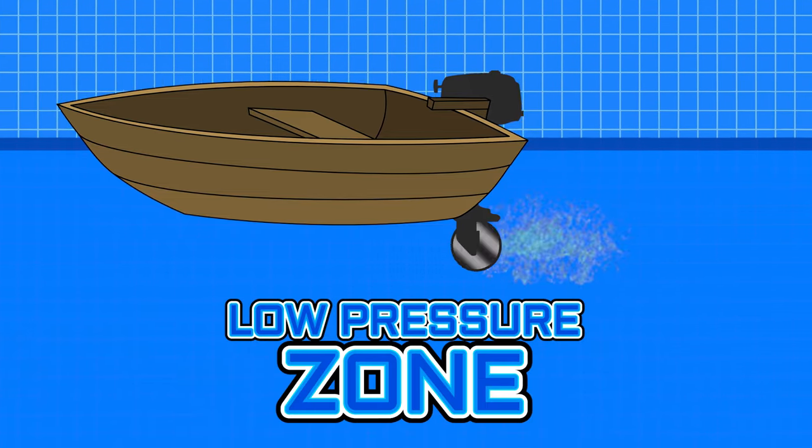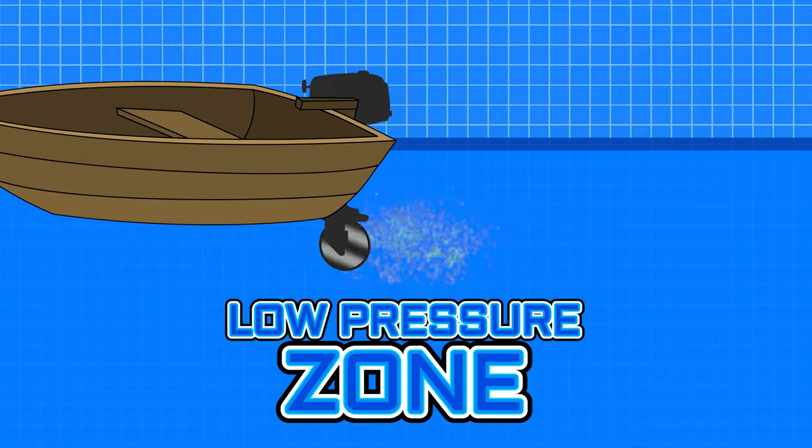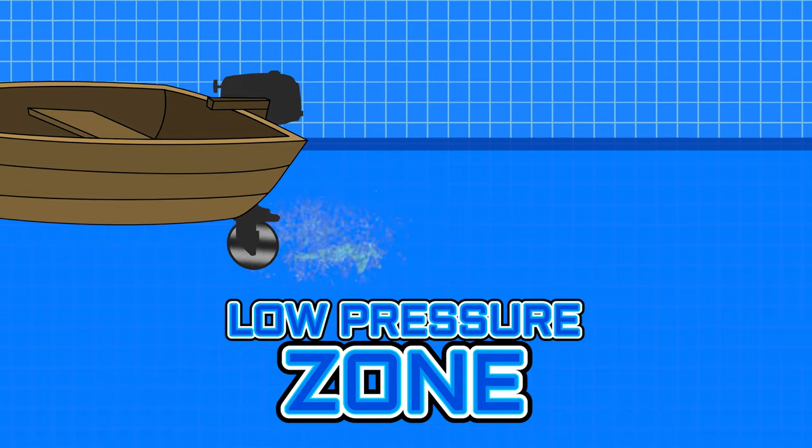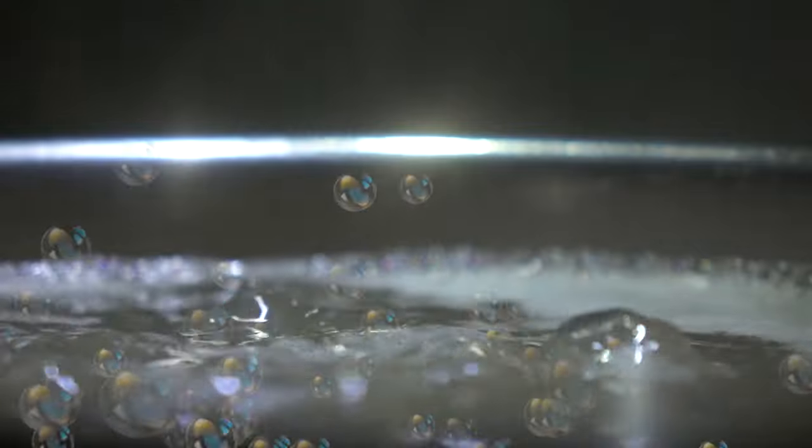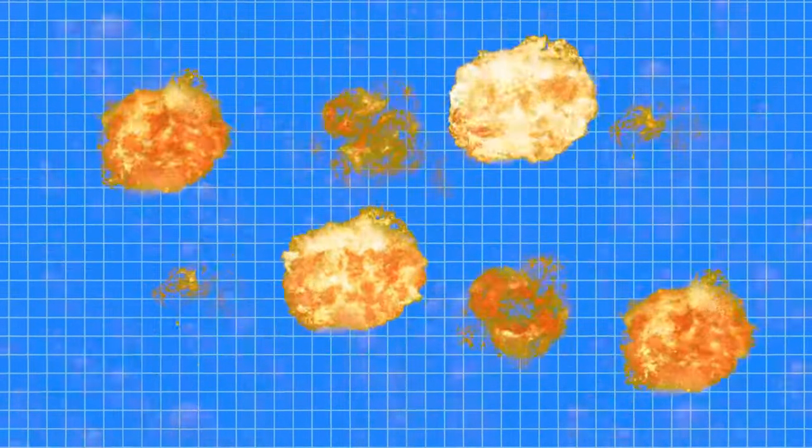This creates a low pressure zone on the trailing side of the propeller. This low pressure zone causes the water to boil at ambient temperatures of the fluid, so small steam bubbles are created due to boiling. These steam bubbles then implode due to the surrounding pressure of the water.